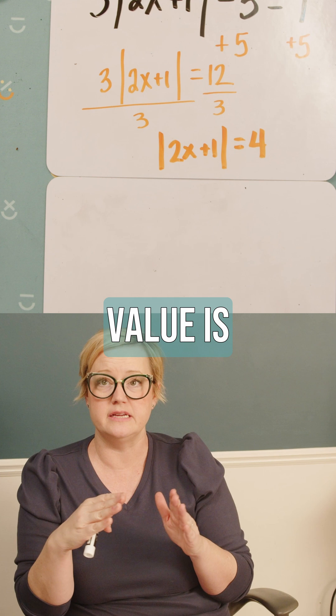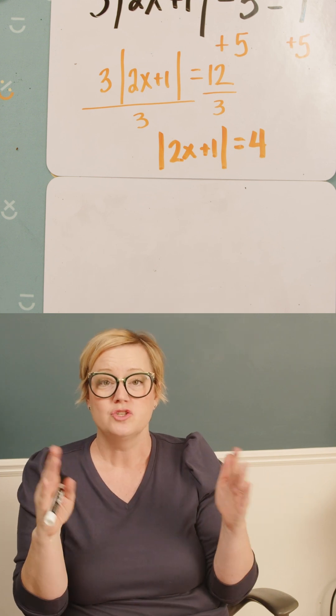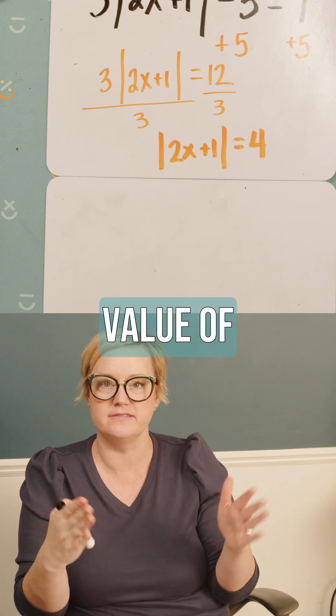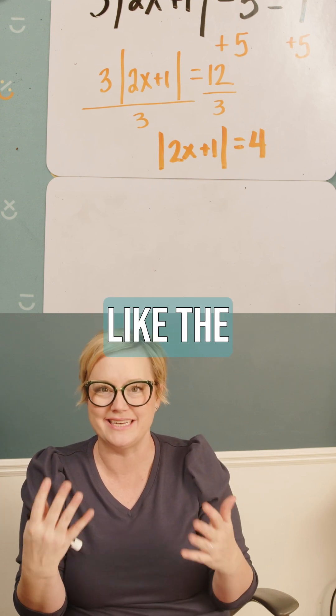Absolute value is distance on a number line. So distance, when you're talking about on a number line, it doesn't have a sign. So the absolute value of something is not negative because it's just like the distance, right?